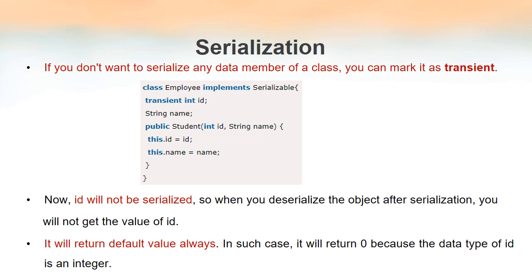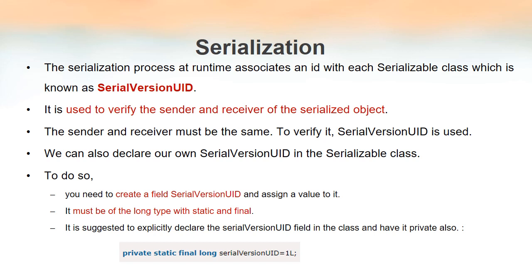The process of serialization always associates a unique id at runtime with each serializable class. That id is known as SerialVersionUID. It is used to identify or verify the sender and receiver of the serialized object — the sender and receiver must be the same. We, the programmers, can also declare our own SerialVersionUID. In order to do that, we have to follow these steps: first, create a field whose name is SerialVersionUID and assign a value to it.